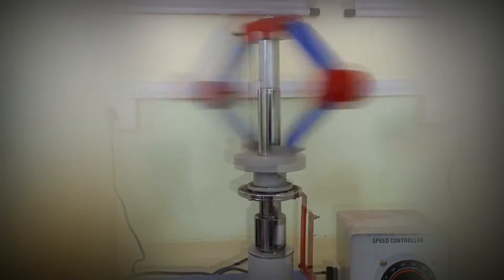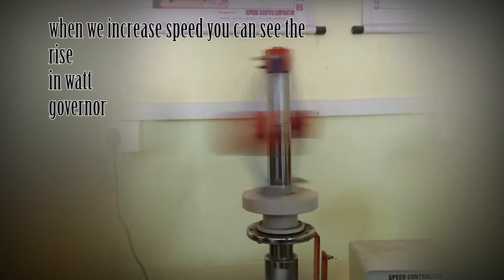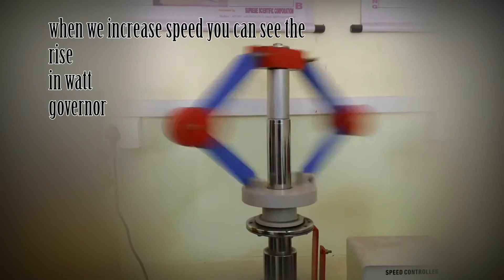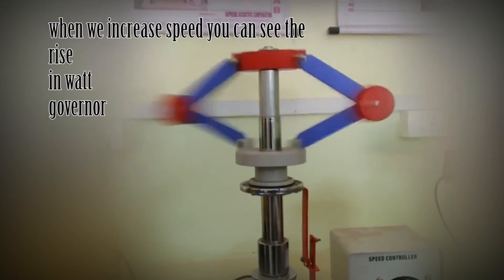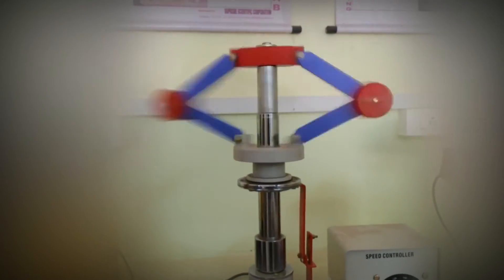When speeds increase, we increase the governor. As you can see in the video, this is the working. There are some limits for the Watt governor as well. It is also called a centrifugal governor.